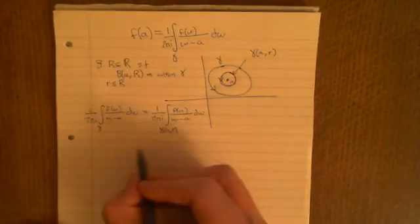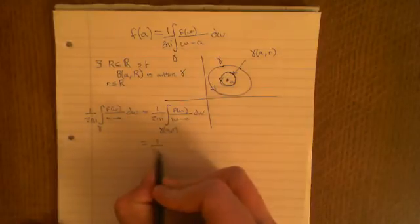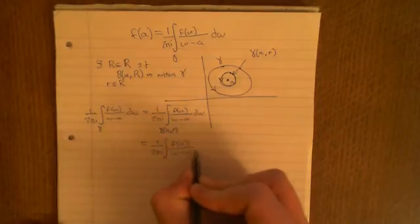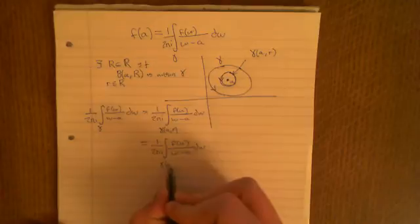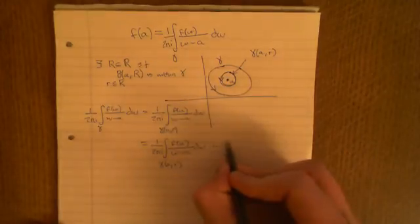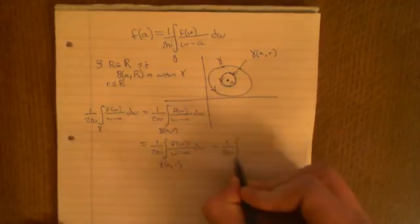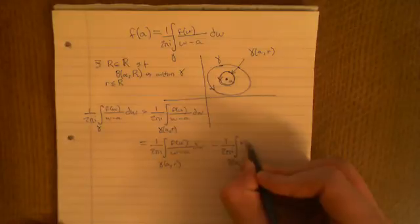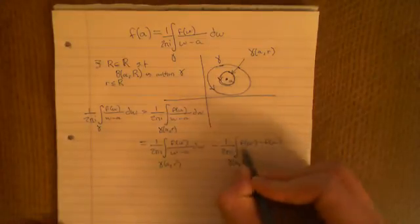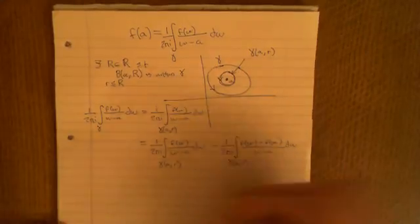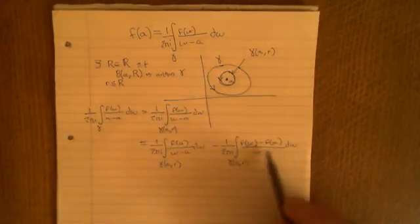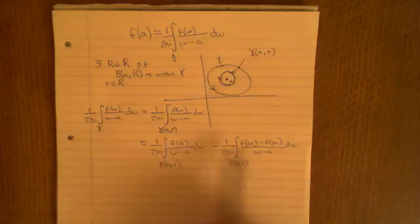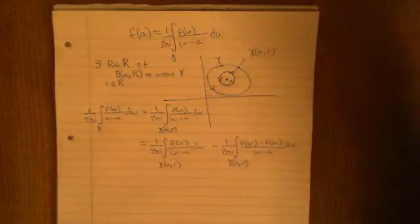That's the first step. The second step is something really obvious. We can write this as 1 over 2πi times the integral of f(a) over (w minus a) dw — which is completely false — so I have to correct it by adding f(w) minus f(a) over (w minus a). Now I've written a false statement and added this term to correct it; combining the two integrals, the f(a) minus f(a) cancels and you get back to the original.